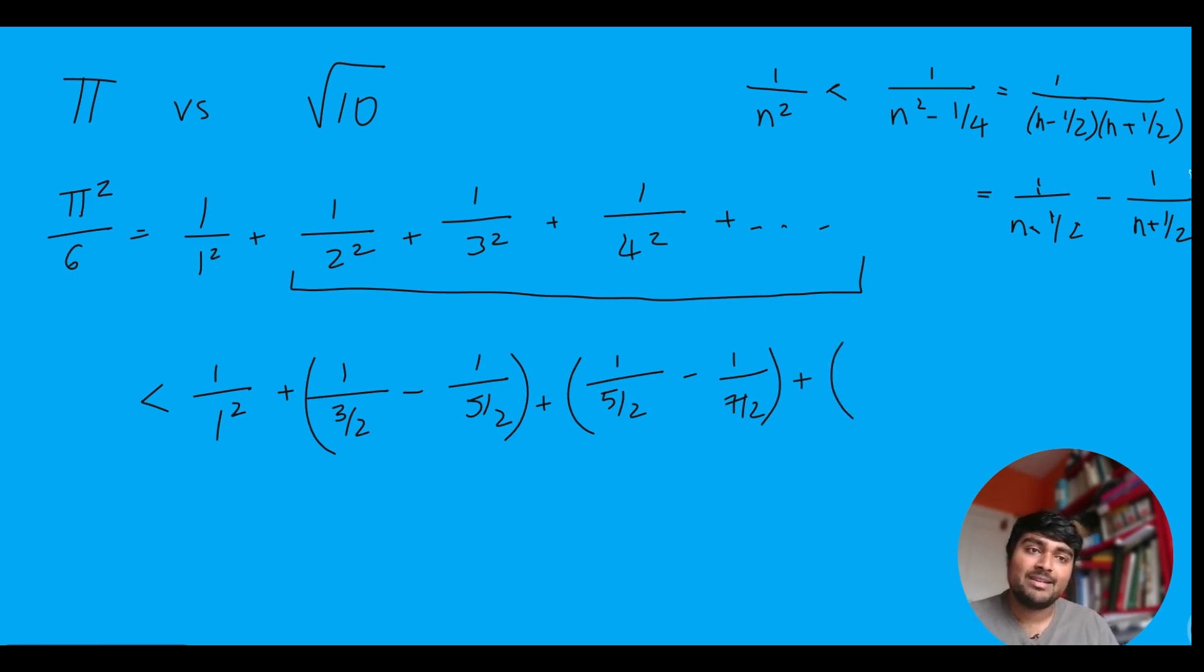What about if we sub in n is 4 into this? Well, we're going to get 1 over 4 minus a half, which is 1 over 7 over 2, minus 1 over 4 plus a half, which is 1 over 9 over 2. And this carries on forever.